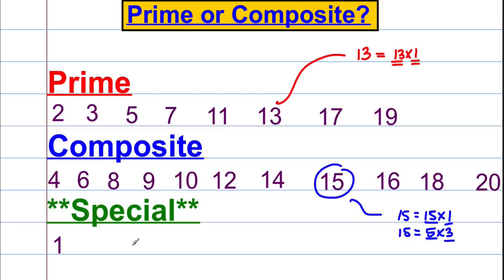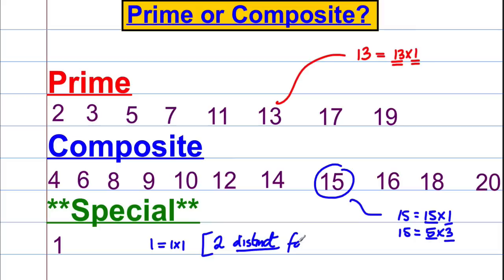One is a special number. The reason one is special is it can only be written as one multiplied by one. When we defined primes, we said they need two distinct — meaning two different — factors, like thirteen had thirteen and one. One and one is the same number, so it's not prime, nor is it composite. It's just a special case.